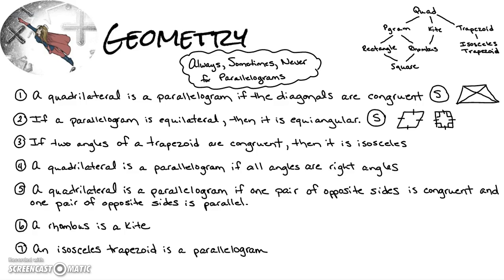Number three: if two angles of a trapezoid are congruent, then it is isosceles. The first reaction is to say always, but it's only sometimes true. It's true for base angles in an isosceles trapezoid, but you could construct a trapezoid where two angles are each 90 degrees — those are congruent — yet it's not an isosceles trapezoid.